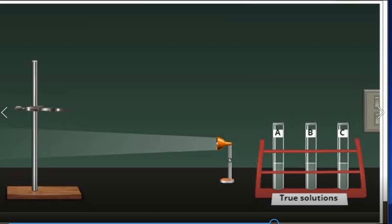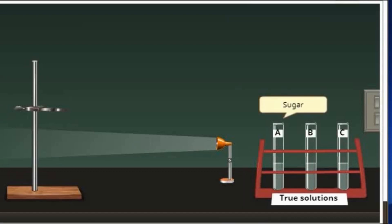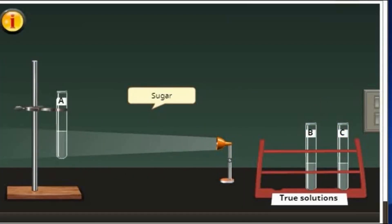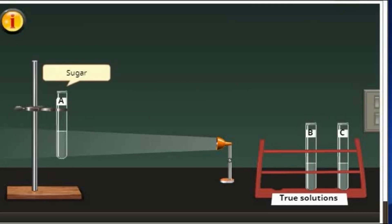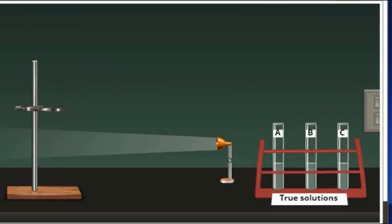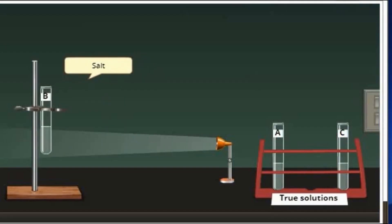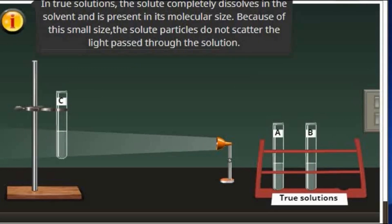Which among these solutions will show Tyndall effect? The Tyndall effect is the scattering of light by the dispersed particle of a mixture. The sugar solution did not show Tyndall effect, also with other solutions B and C. This only shows that in true solutions, the solute completely dissolves in the solvent and is present in its molecular size. Because of this small size, the solute particles do not scatter the light passed through the solution.